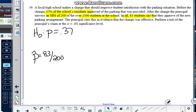Okay. The next thing I see, the principal cites this as evidence that the change was effective. And so you have to use a little bit of context here to understand what the effective change would be. Would that increase or decrease the proportion of students that are satisfied? That's going to increase, which means my proportion should be greater than 0.37.